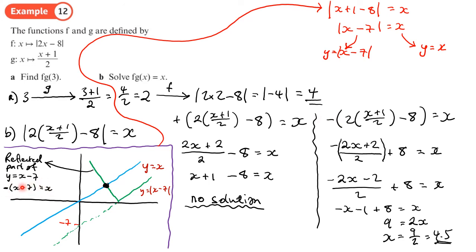This links into transformations: if you apply the transformation −f(x) you reflect the graph in the x-axis. The reflected part of the graph here is the same as y = −(x − 7), which is why we put a negative in front of the brackets — and why we only got a solution on that side. Sketches can save you doing the extra working. You should now be able to do exercise 2c on pages 34 to 35.